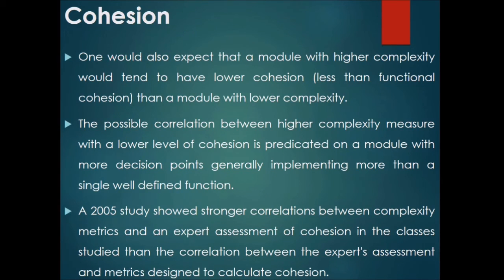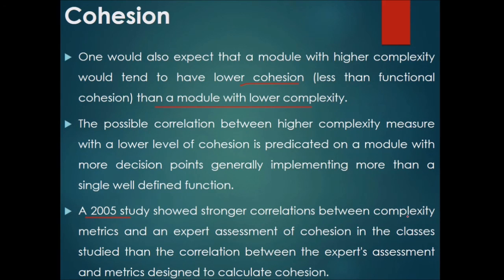One would also expect that a module with higher complexity would tend to have lower cohesion than a module with lower complexity. The possible correlation between higher complexity and lower cohesion is based on the observation that a module with more decision points tends to implement more than a single well-defined function. A 2005 study found a stronger correlation between complexity metrics and expert assessment of cohesion than between expert assessment and metrics specifically designed to calculate cohesion.